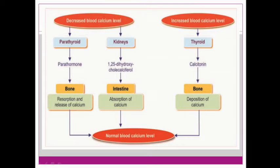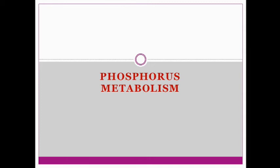When there is decreased blood calcium level, it will act either on your parathyroid or kidneys through parathormone for resorption and release of calcium. The active form of vitamin D will act on your intestine for calcium absorption. When there is increased blood calcium level, it will act on your thyroid through the hormone calcitonin, which will lead to deposition of calcium and restoration of normal blood calcium level.